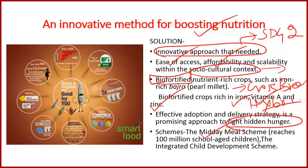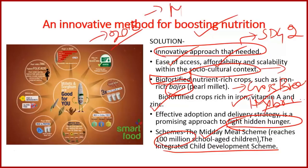Government schemes like the Midday Meal Scheme, reaching about 100 million school-aged children, and the Integrated Child Development Scheme are important vehicles to boost nutrition. Bajra, which falls under the millets category, is an important crop for biofortification to decrease anemia. 2018 is called the International Year of Millets. Millets are high in fiber, rich in antioxidants, gluten-free, contain high levels of folic acid essential for pregnant women, and are rich in iron and protein.